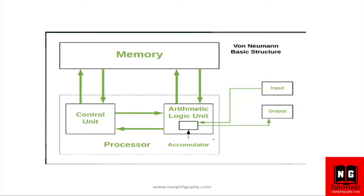Let's see them one by one. The first one is memory, which stores the data on which we have to perform or execute our tasks. It also stores intermediate data — that is, values which are not the final result but are needed further to calculate the results. Memories in a computer system are of different types, which we will learn when we reach the memory organization chapter.